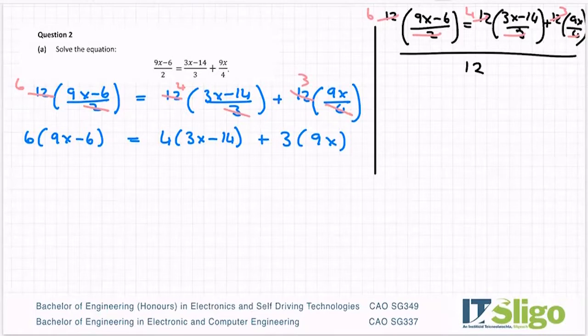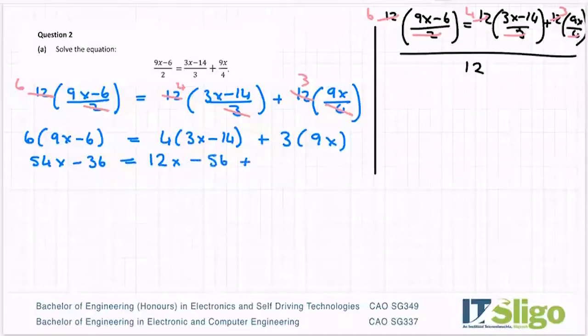So let's multiply 6 nines, 54x, 6 sixes, 36, and of course plus by minus is a minus, equals 4 by 3, 12x. And you keep multiplying until the bracket closes. 4 by minus 14, do that one on a calculator, is minus 56, and 9 times 3 is 27x.